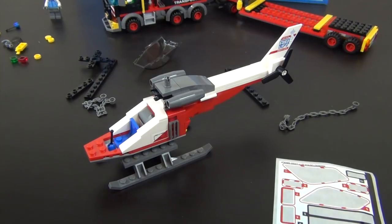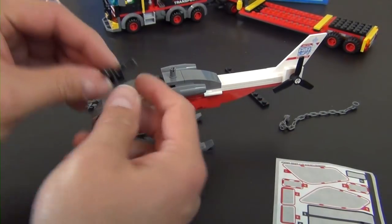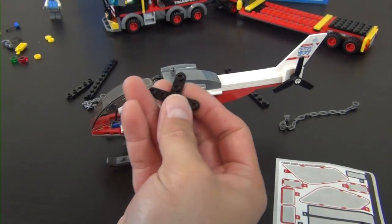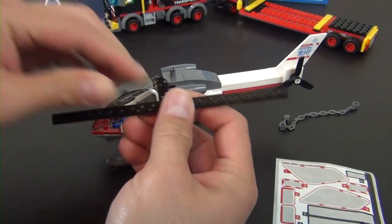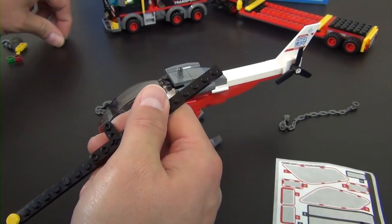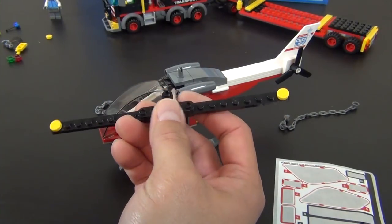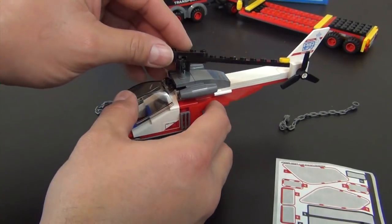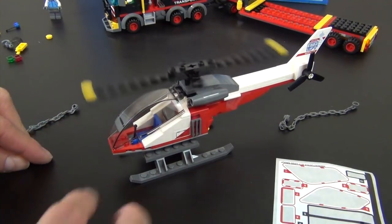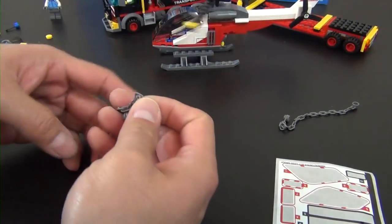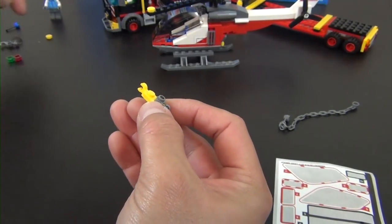Helicopter is coming together pretty well. We have our windscreen. A couple of yellow round tiles. Those are cool because when you spin the rotor, I'll stick it on here. Kind of indicates where the edge is so you hopefully don't put your finger in it, chop your finger off. It actually won't chop your finger off but you get the idea.